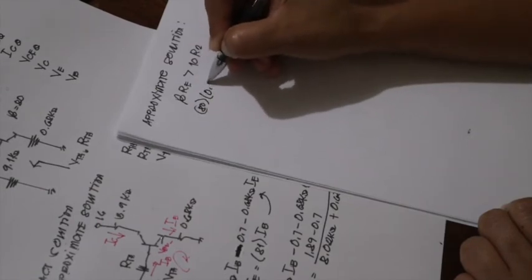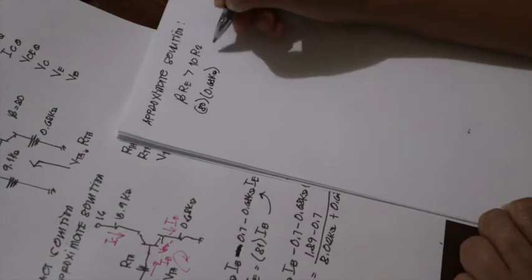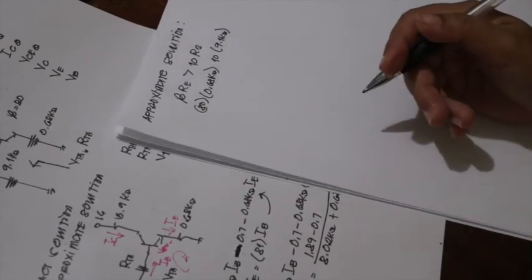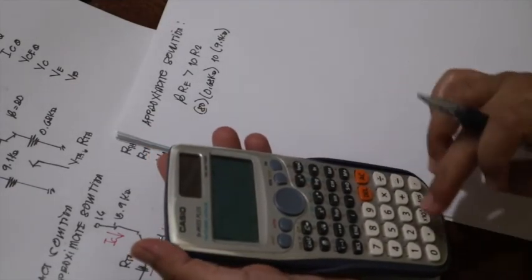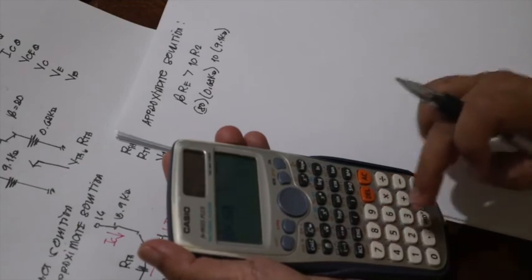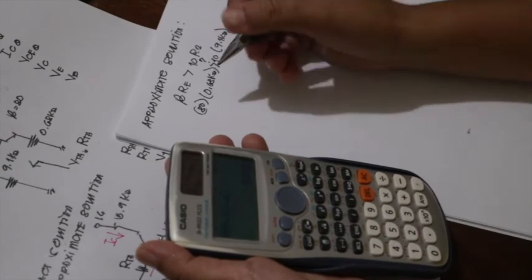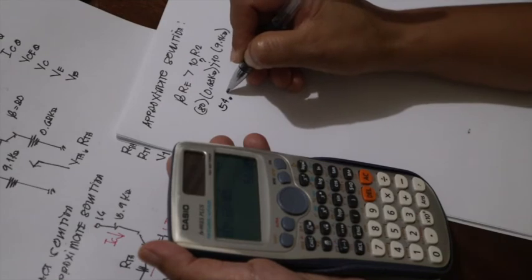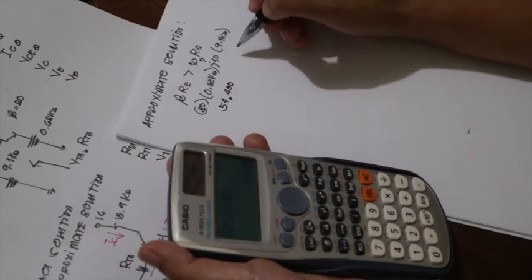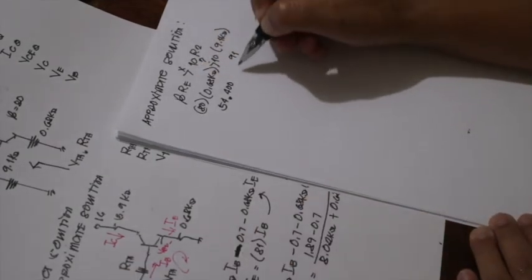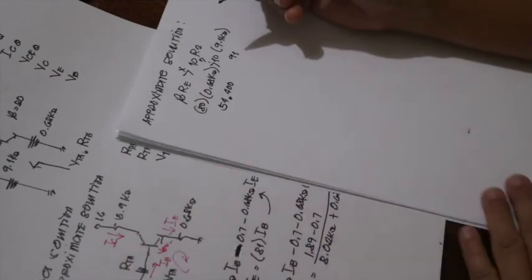Let's check if this condition is satisfied. 80 multiplied by 0.68 kilo-ohm, is it greater than 10 times 9.1 kilo-ohm? 80 times 0.68 gives us 54,400, and that is not actually greater than 91,000. We cannot satisfy this condition, so we cannot actually solve this one using the approximate solution. Only the exact solution works here.